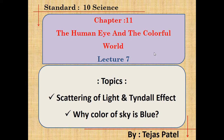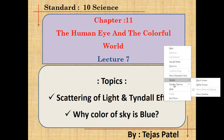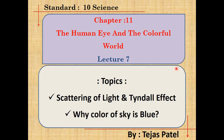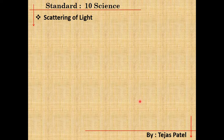Welcome everyone to lecture number 7 of 'The Human Eye and the Colorful World.' Today we are going to discuss two more points: scattering of light and the Tyndall effect, and why the color of the sky is blue. First, we are talking about the scattering of light. I am going to show you some examples by which you can easily understand what scattering of light is.